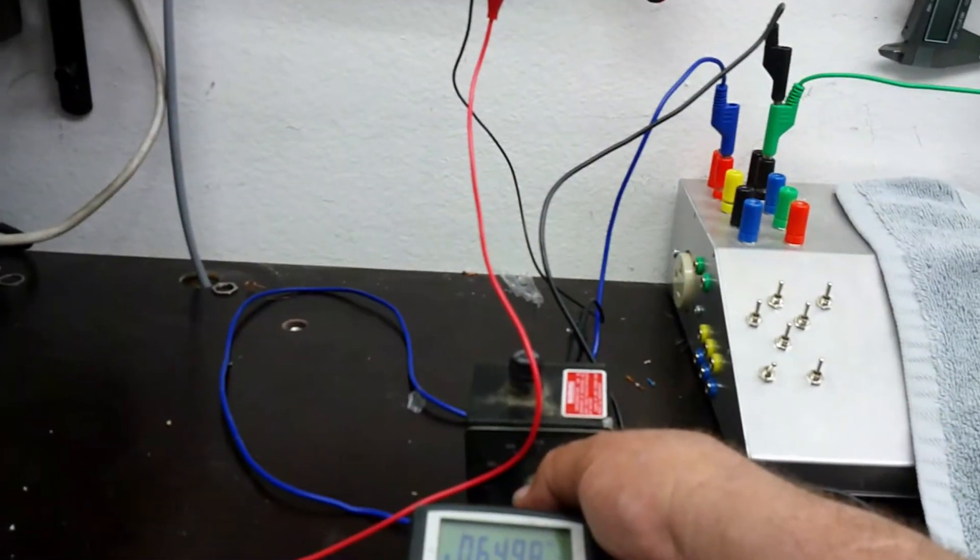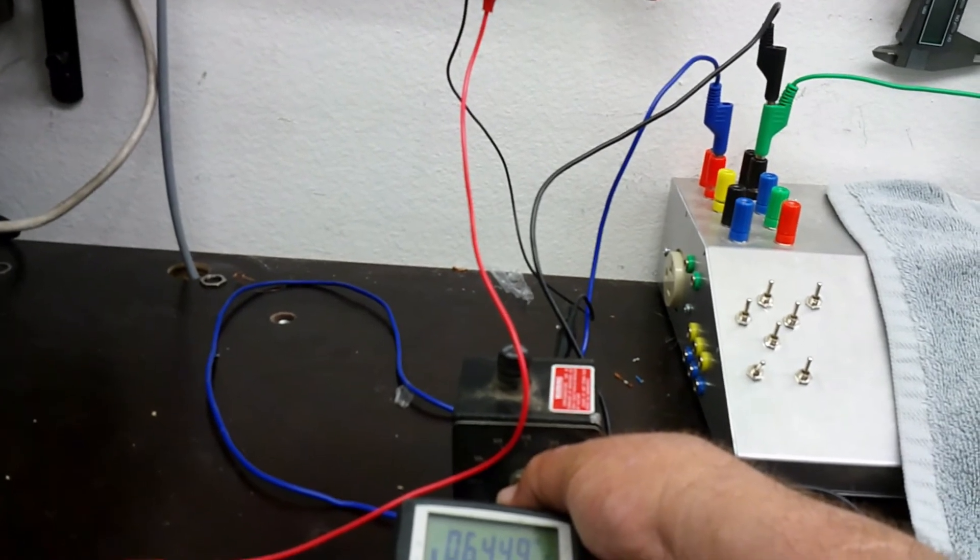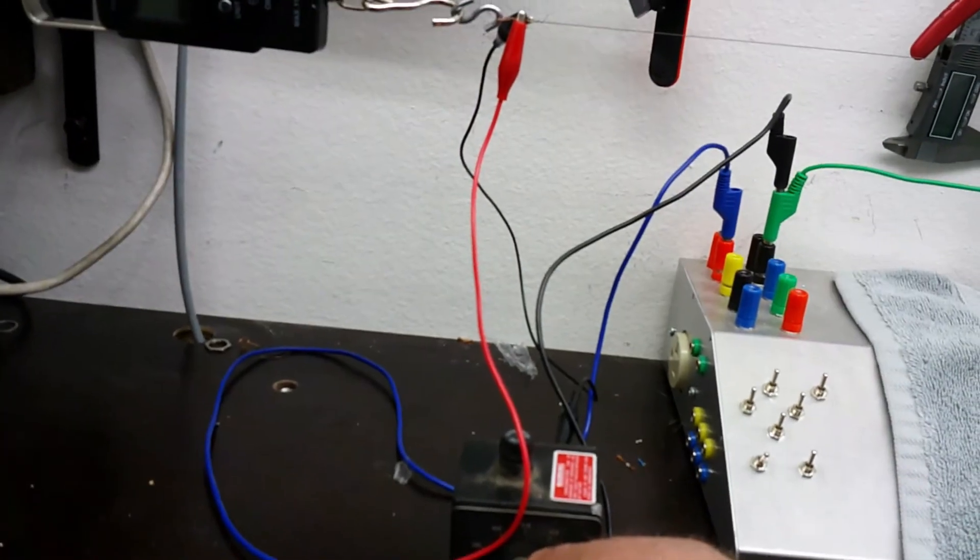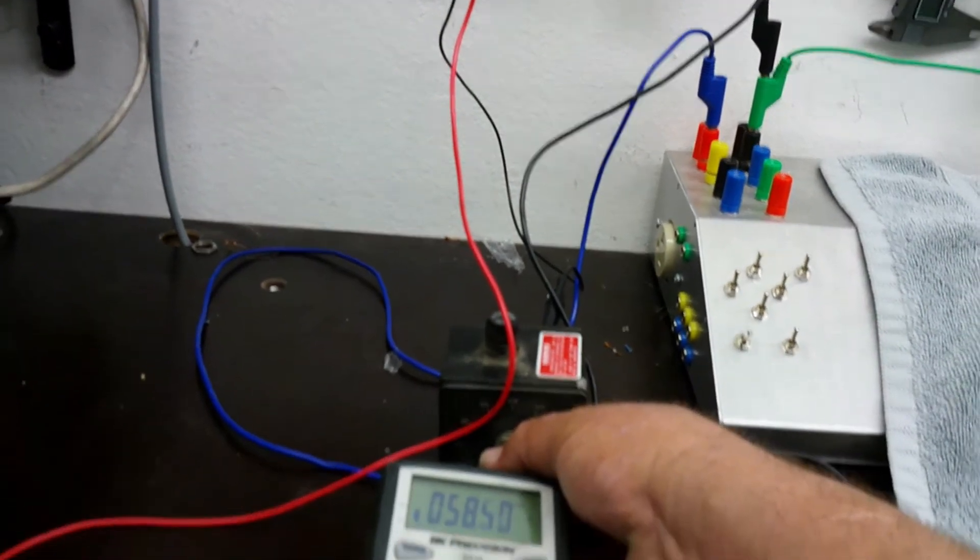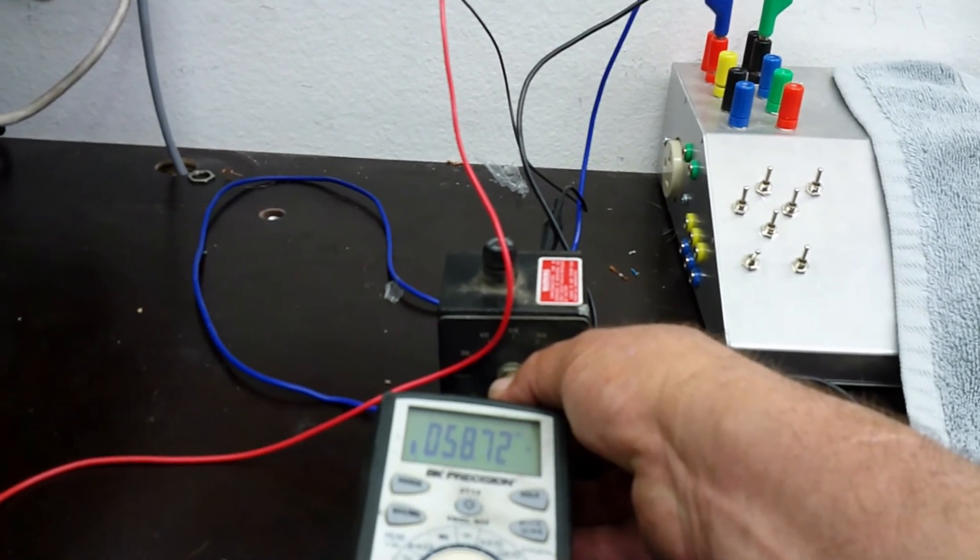I'm going to adjust this voltage a little bit. You can see, as I turn it down, voltage goes down. Now the wire is nearly off. Turn it up—the voltage goes back up.